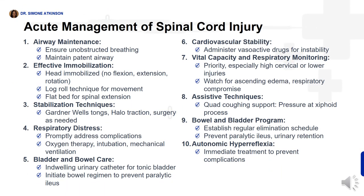Acute management of patients with spinal cord injury involves several crucial steps to prevent further damage and stabilize the client. The nurse's primary responsibility is to maintain a patent airway by assessing and ensuring unobstructed breathing. To immobilize the injury, the nurse should keep the client's head immobilized without flexion, extension, or rotation, and if necessary, manual traction on the head can be applied by placing hands near the ears. When moving the client, a log roll technique should be used, avoiding any twisting or turning of the spine. The head of the bed should be kept flat. Stabilization may require Gardner-Wells tongs, halo traction, or surgical intervention depending on the indication.